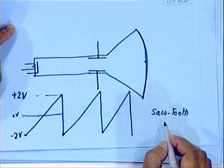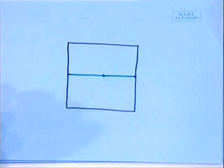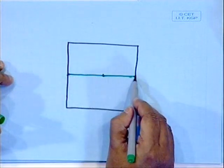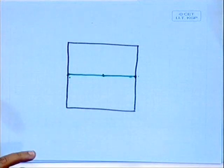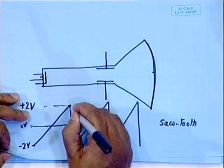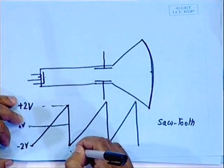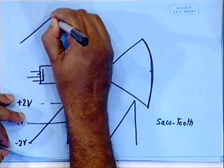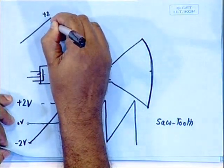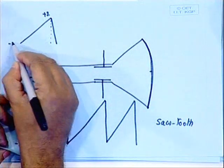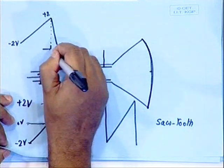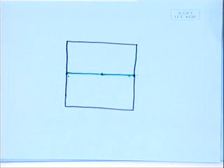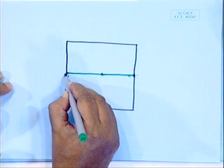We apply a sawtooth voltage on the horizontal deflection plates or coils, bringing the beam from the left-hand side to the right-hand side linearly, and then immediately bringing it back to the left. In practice it is very difficult to generate such a sharp fall — there will be some finite time, perhaps a few microseconds, for the voltage to drop from plus 2 volts back to minus 2 volts. During that finite time, however small, there will be a faint trace as the electron beam retraces.